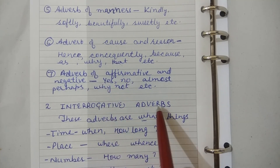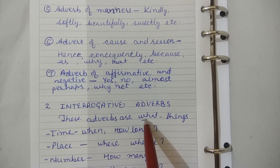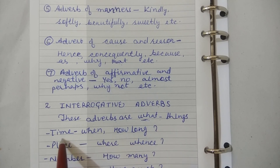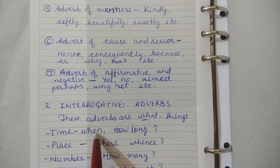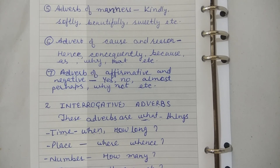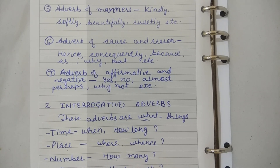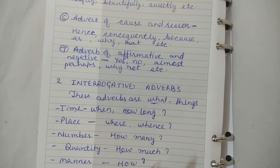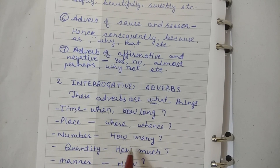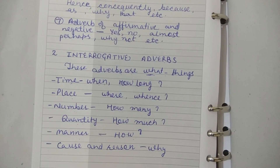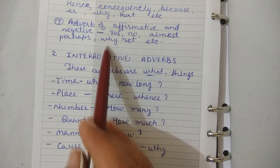Next is our interrogative adverbs. These adverbs ask questions. For time: when, how long — e.g., When will you come to school? How long will you stay here? For place: where, whence — e.g., Where are you going? For number: how many — e.g., How many pens do you have? For quantity: how much — e.g., How much water do you have? For manner: how — e.g., How are you? For cause and reason: why. These are our examples of interrogative adverbs.